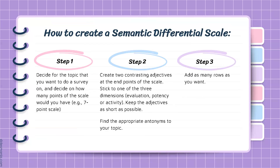There are 3 steps in creating a semantic differential scale. Step 1: Decide on the topic that you want to survey on and decide how many points the scale will have — for example, a 7-point scale. Step 2: Create two contrasting adjectives at the end points of the scale. Stick to one of the three dimensions — evaluation, potency, or activeness, also known as activity. Keep the adjectives as short as possible and find appropriate antonyms for your topic. Add as many rows as you want.